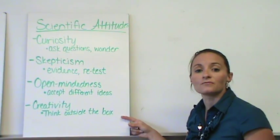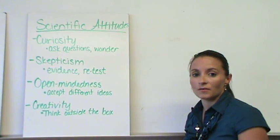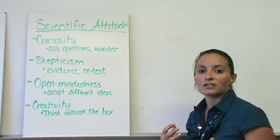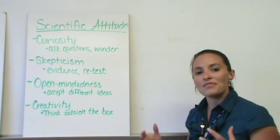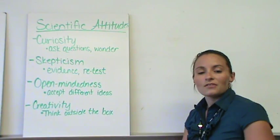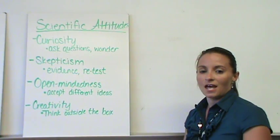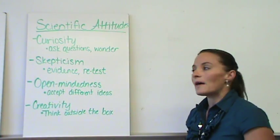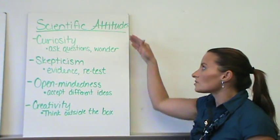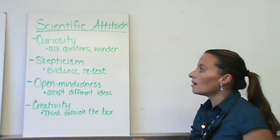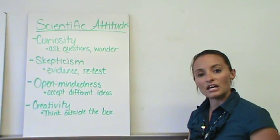And the final piece of science that's really important is creativity. You need to be able to think outside of the box. So many of our big discoveries have come because people were not thinking normally. They were trying to come up with some ideas that were not just the normal. And because of that, they were able to come up with some major discoveries. So the four scientific attitudes are curiosity, skepticism, open-mindedness, and creativity.